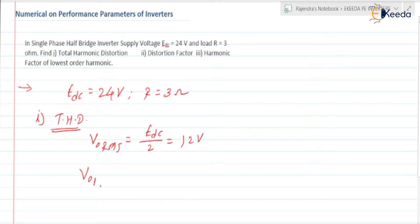What is the V01RMS? RMS value of fundamental component output voltage. If you check it is root 2 into EDC divided by pi. So it is equal to root 2 into 24 divided by pi. If you check it is equal to 10.80 volts. This is V01RMS.